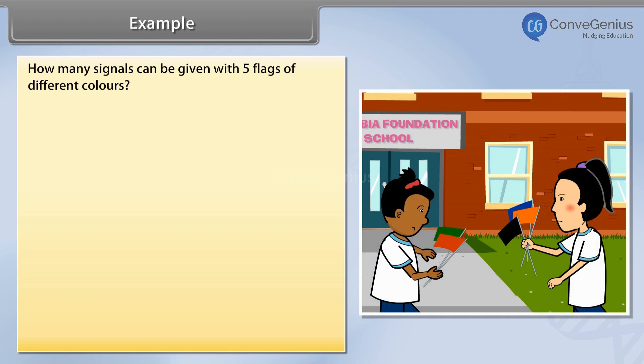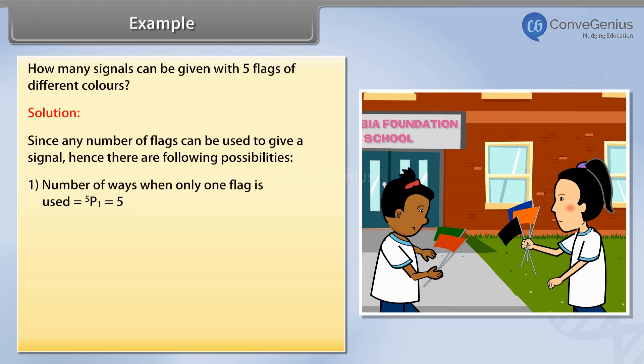How many signals can be given with five flags of different colors? Solution: Since any number of flags can be used to give a signal, hence there are following possibilities. 1. Number of ways when only one flag is used is equal to 5P1 = 5.